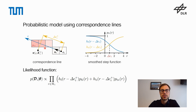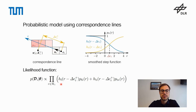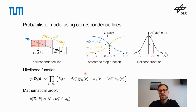For the likelihood function, we consider multiple pixels along the correspondence line. A pixel is described by the value r that points from the correspondence line center to the center of a pixel. The nice thing about our likelihood function is that we can prove mathematically that for particular smooth step functions hf and hb, this likelihood function actually follows a normal distribution. This means that for particular projected distances delta c that shift our smooth step functions, we get a probability value that lies on a normal distribution.